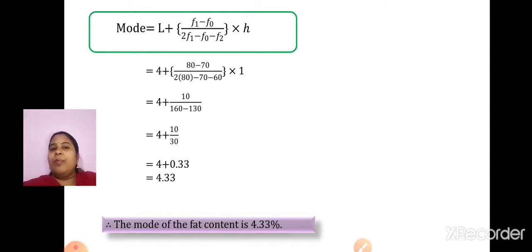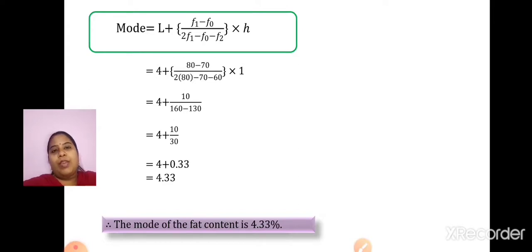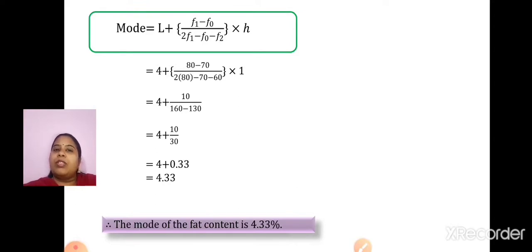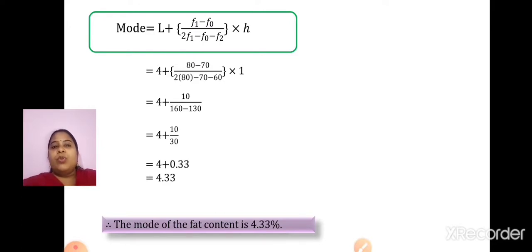What is the basic thing to remember? For mode, we concentrate on maximum frequency — that is F1. Maximum frequency: just above that will be F0, below it will be F2. Like that, we find all the values required for the formula. L will be the lower limit of the modal class; H will be the width of the modal class. Now we move on to the next question.